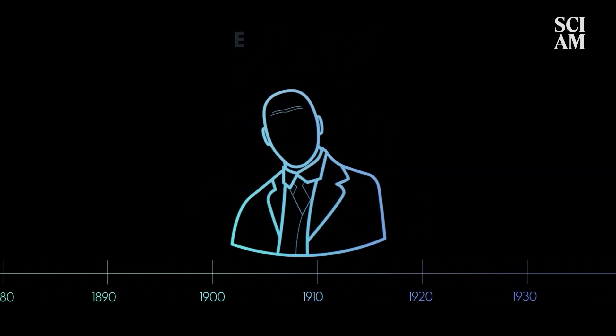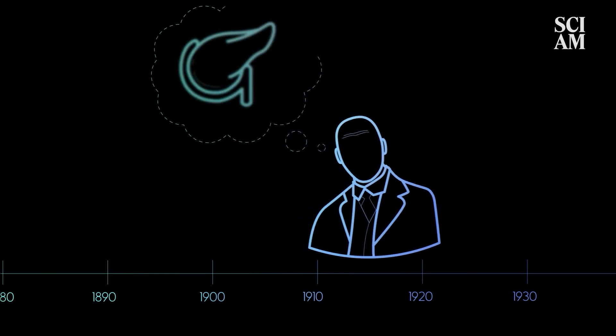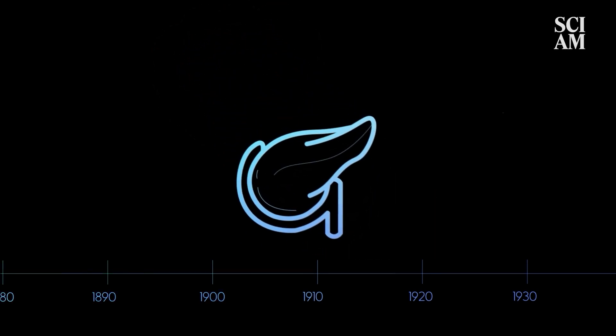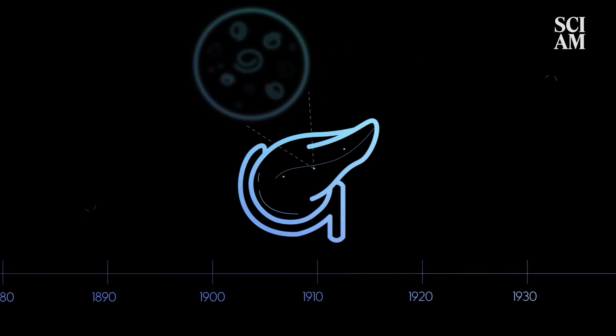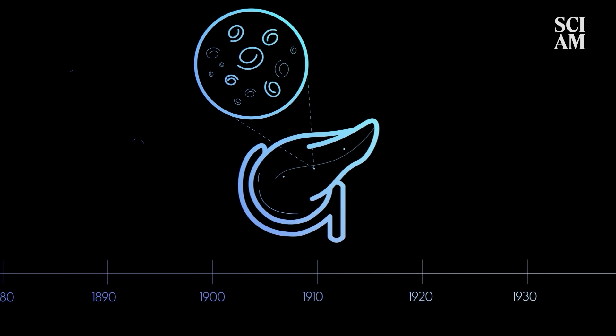Shortly after that, Edward Albert Sharpie Schaefer hypothesized that diabetes was a result of a deficiency in a single chemical made in the region of the pancreas called the islets of Langerhans. He called the chemical insulin, relying on the Latin word insula, for island, to give credit to those islet cells.